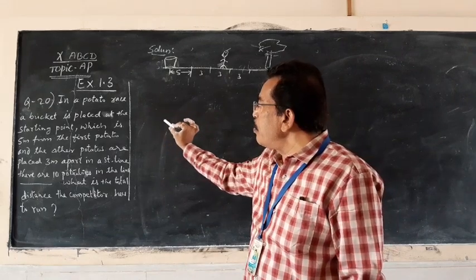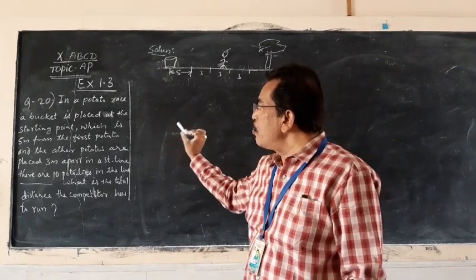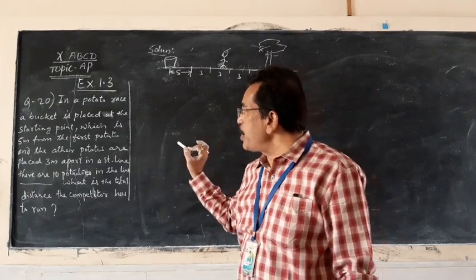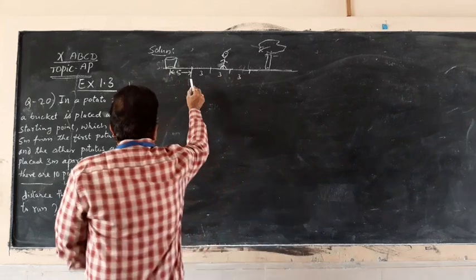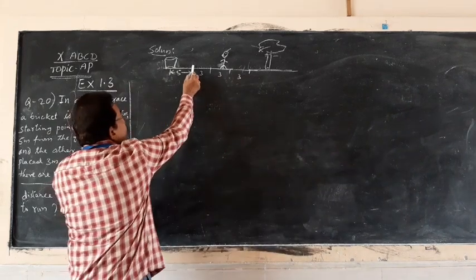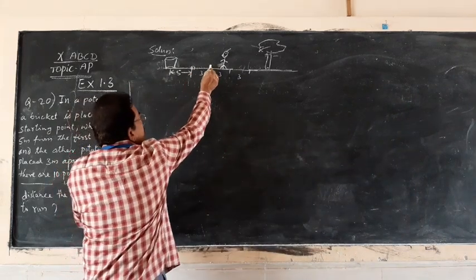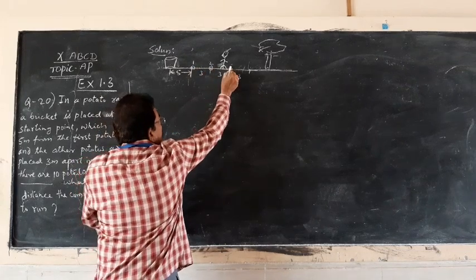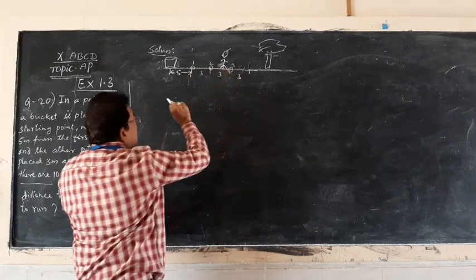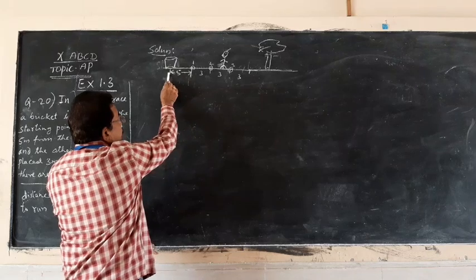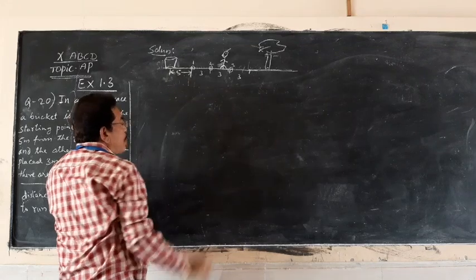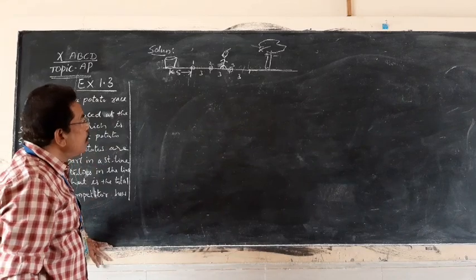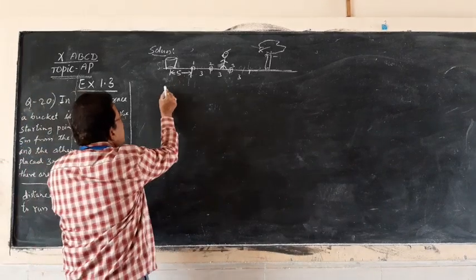In a potato race, a bucket is placed at the starting point which is 5 meters from the first potato. Here is the first potato, here is the second potato, one two, here is the third potato, like this. From the first potato, the bucket is 5 meters away.